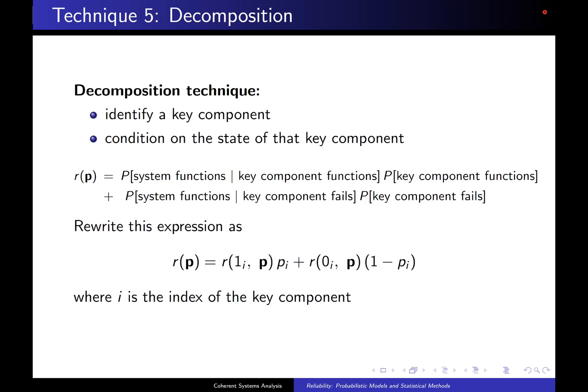The first step is to identify a key component, and then the second step is to condition on the state of that key component. Now you can choose any component you want as the key component, but sometimes the technique is a little bit easier if you choose a component that has a particularly unique position in the system, and we'll see how that works in an example going forward.